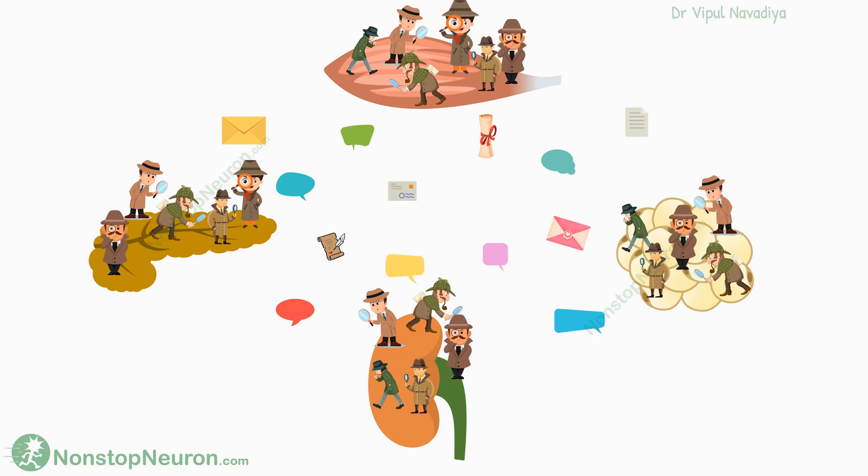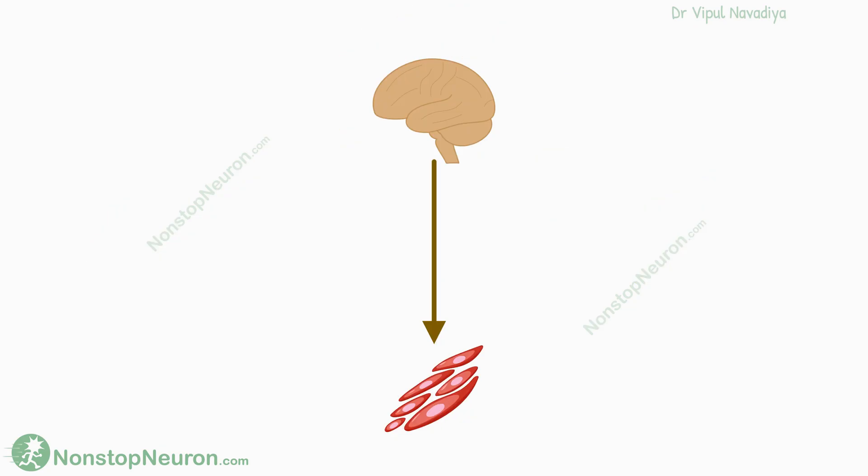Usually, we don't find anything interesting regarding this communication and learn it with rote memorization, but it does not need to be so. Actually, there is a common pattern in the way they communicate. Once you understand that pattern, things become more interesting. To understand the pattern, we will take the example of communication between the nervous system and various smooth muscles in our body.